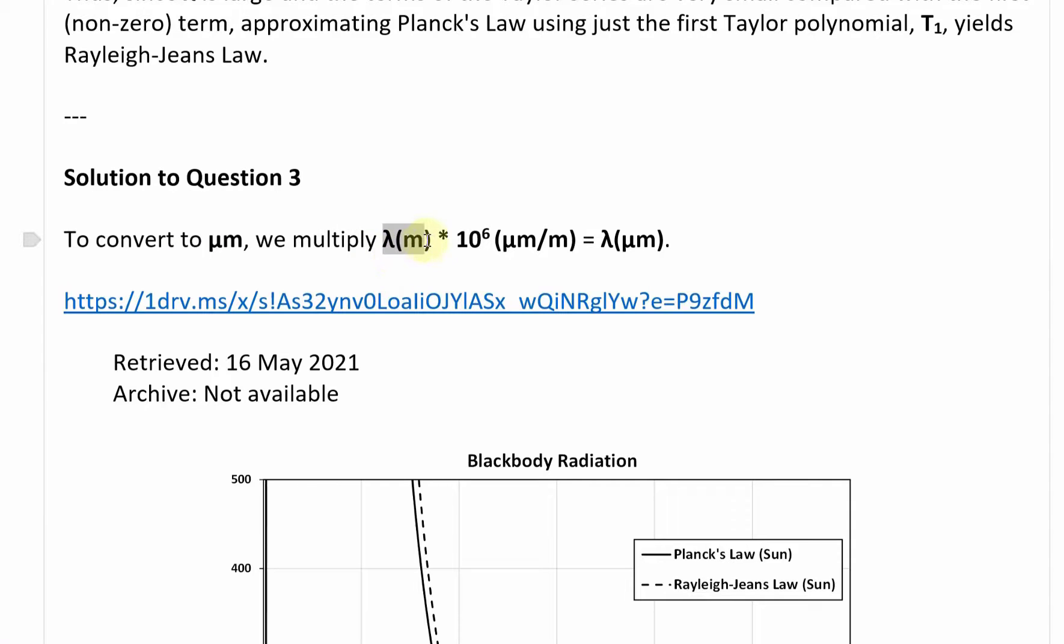Solution to question 3: to convert to micrometers, we multiply lambda, which is the wavelength in meters, times 10 to the 6. This is just 10 to the 6 micrometers divided by meters. Or you could also divide by 10 to the negative 6 if you want.